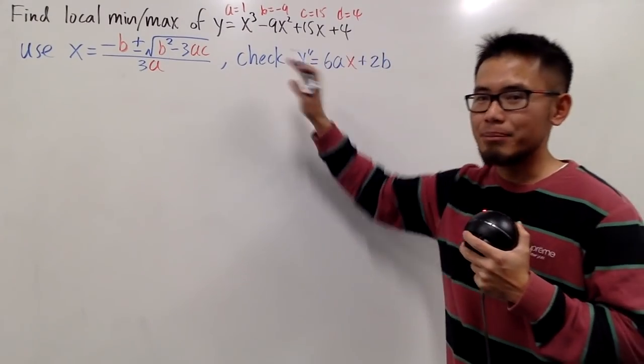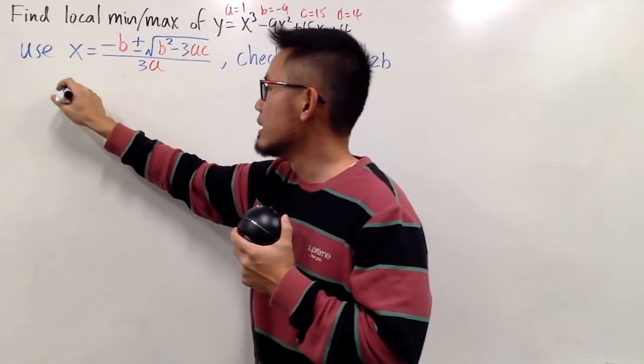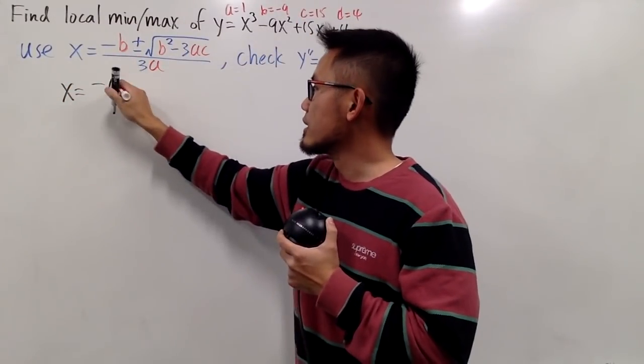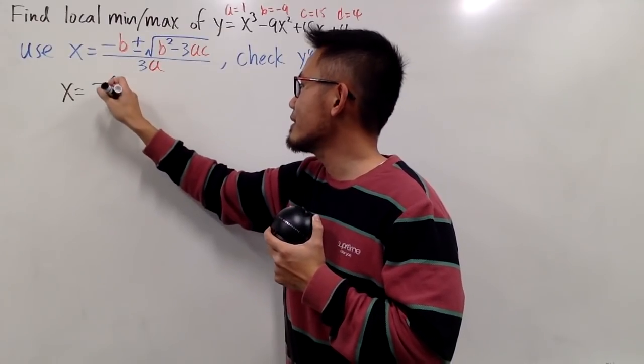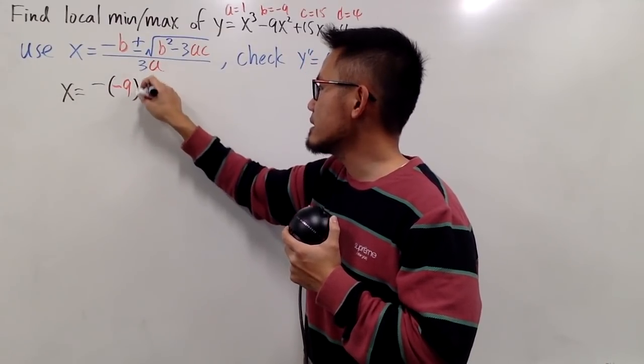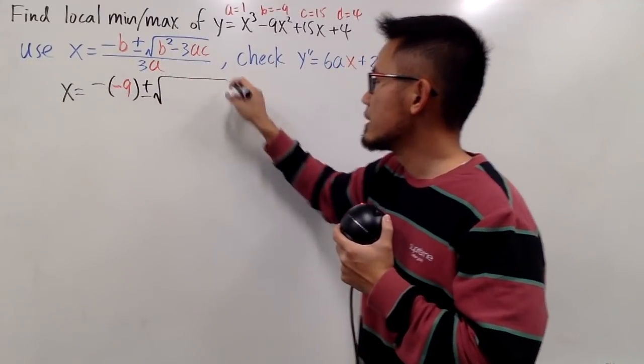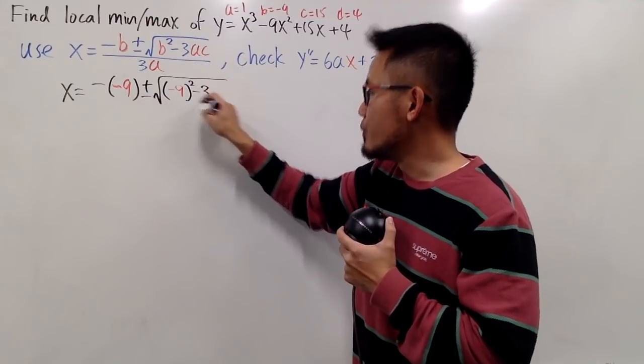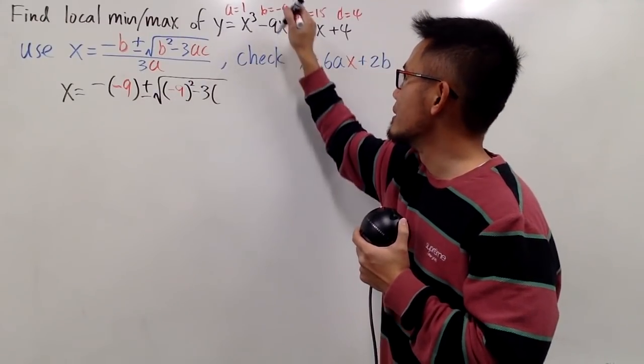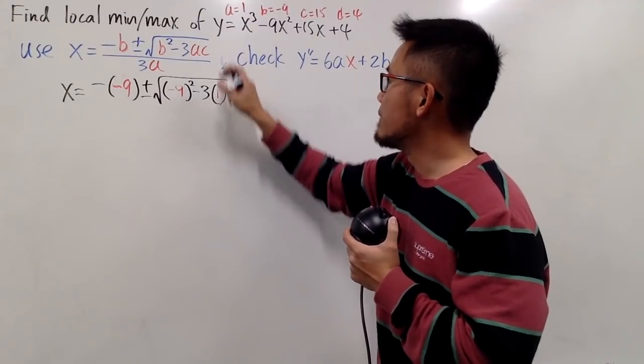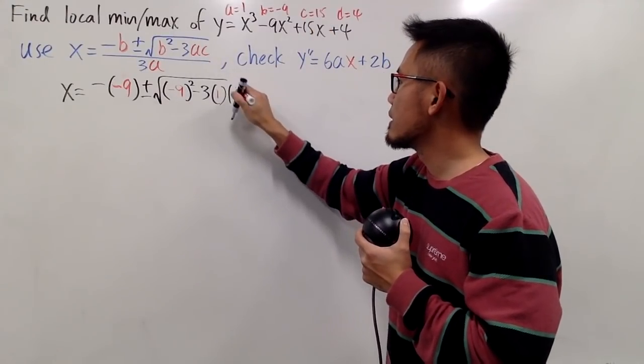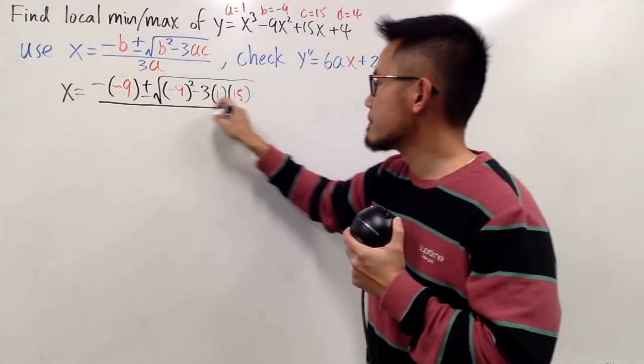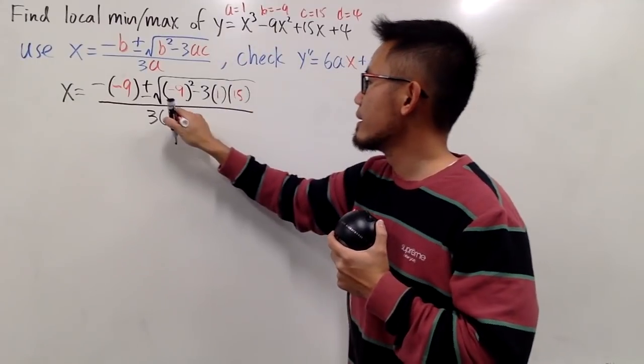Alright, enough talking, let's go ahead and plug in the numbers into the formula and get to work. So X is equal to negative B, which is negative 9. So let's put that down right here. And then we have the plus minus. We open the square root. And then B squared, which we have negative 9, and then square that, minus 3. And then we have the A, which is 1. And the C value is 15. And then over 3 times A, 3 times 1 then.